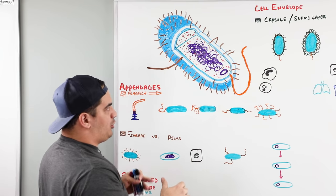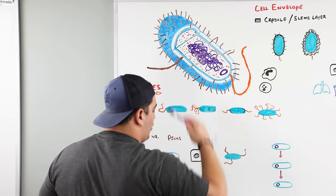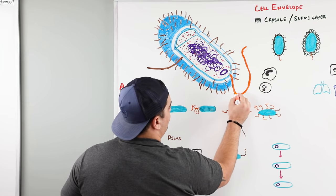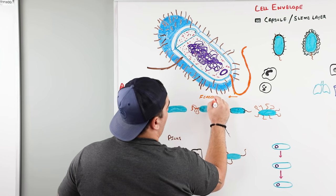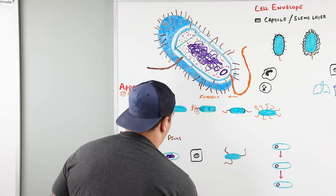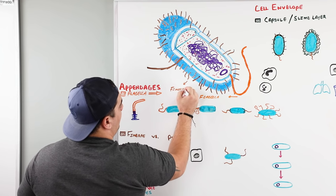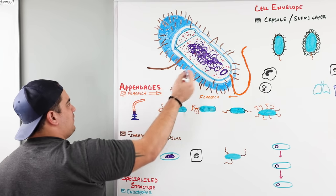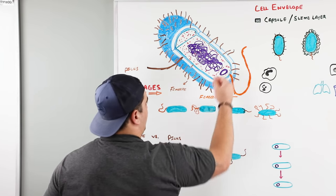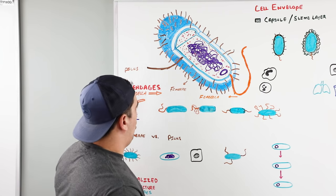First, let's talk about the appendages - things coming off the bacteria. The big orange structure is called the flagella. The tiny brown things coming off the bacteria are called fimbriae. The longer one, which is less frequent, is called the pilus. So the big ones to remember: flagella, fimbriae, and pilus.